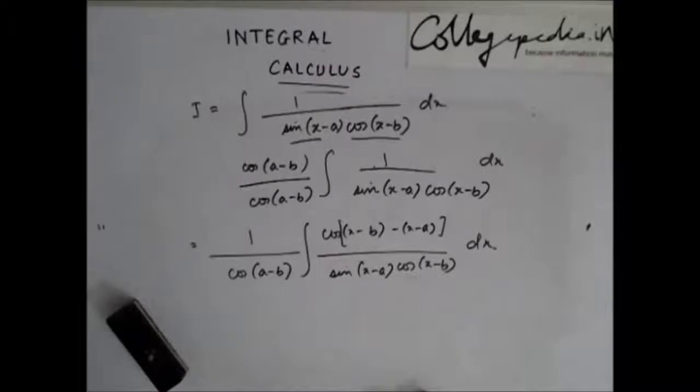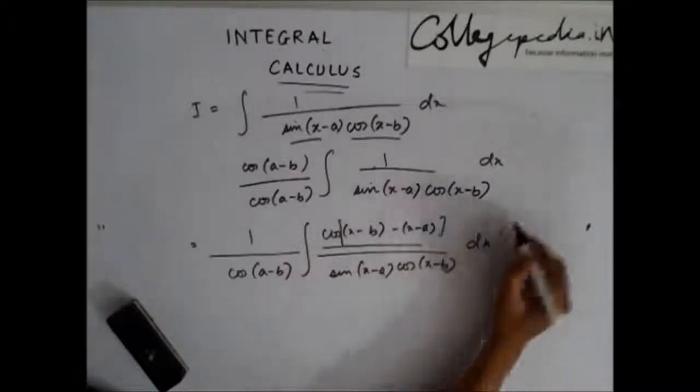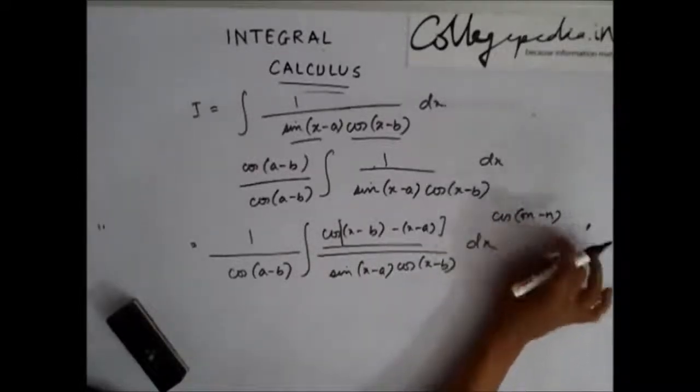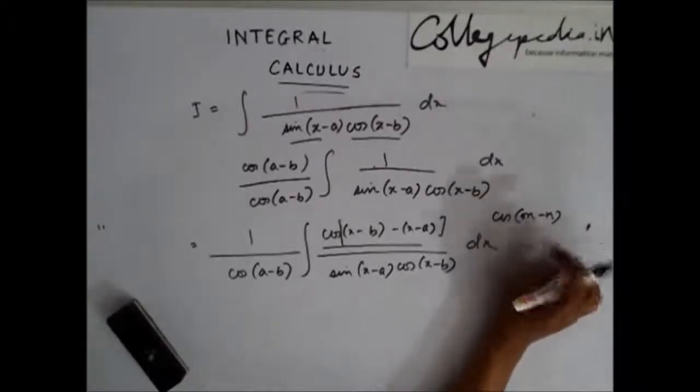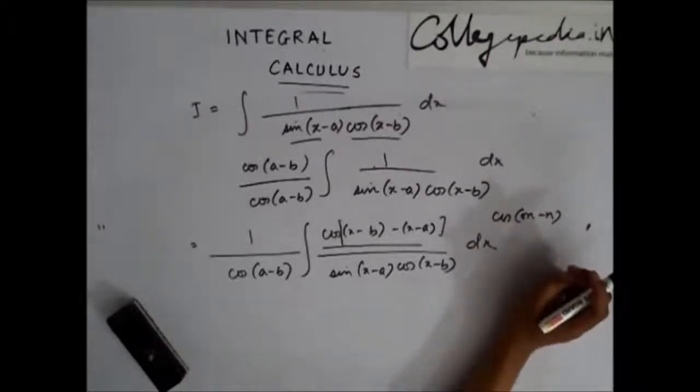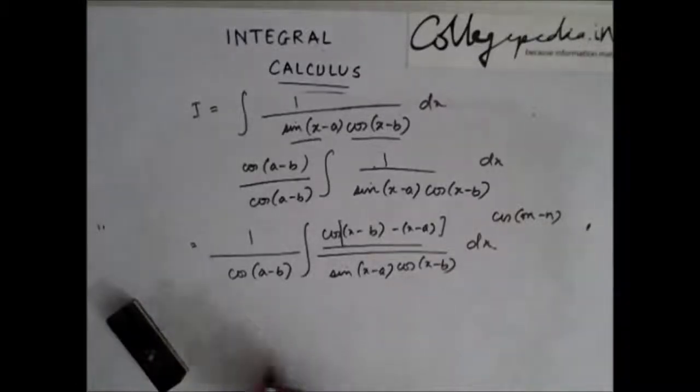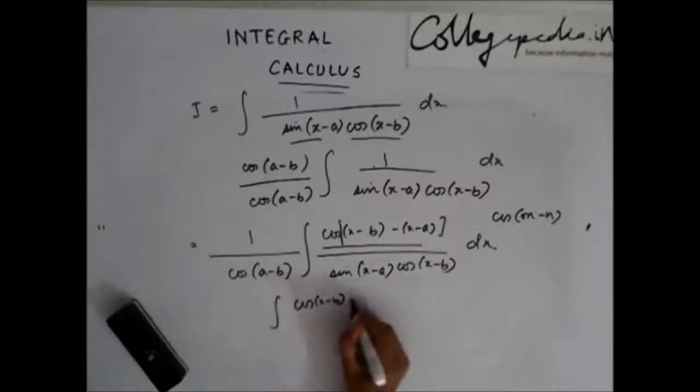Now, cos of m minus n is what? Cos m cos n plus sin m sin n. So I will do that. I will simplify this as cos of x minus b cos of x minus a.